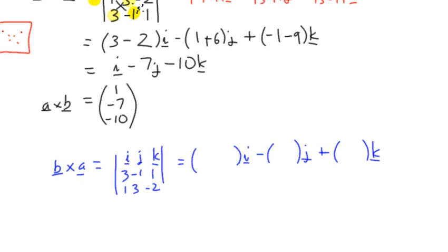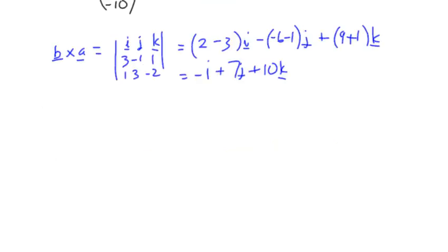When we work out this time, missing out column i we'll have 2 minus 3, missing out column j we've got negative 6 minus negative 1, we've got 9 minus negative 1. When we do that we get negative 1i, and then we've got minus negative 7 becomes plus 7j, and then we've got plus 10k.